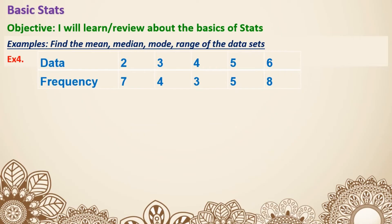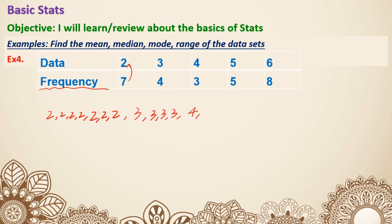Now we have a question that looks a little different — you're given the data and the frequency. Frequency means the number of times that a value appeared. So for the data value 2 with frequency 7, it appeared seven times; value 3 appeared four times; value 4 appeared three times; value 5 appeared five times; and value 6 appeared eight times. You can write out the whole dataset if needed.